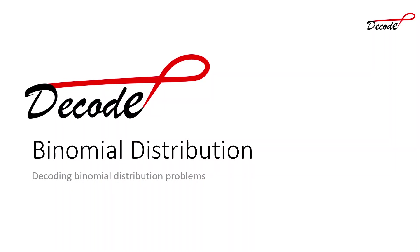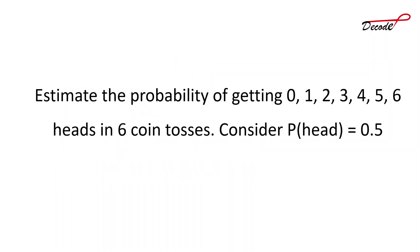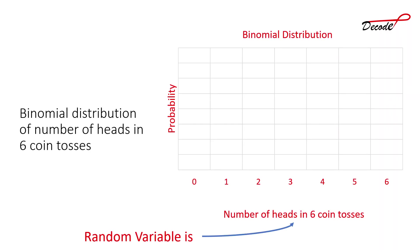Hi everyone, this video is on discussing binomial distribution problems. We shall see some problems on binomial distribution. The problem is: estimate the probability of getting zero to six heads in six coin tosses, where the probability of head is 0.5. If the probability of head is 0.5, the probability of tail is also 1 minus 0.5, that is 0.5. If you toss a coin six times, at most you can get six heads, or at least zero heads. The problem is about estimating the probability of how many heads we will get in six coin tosses.